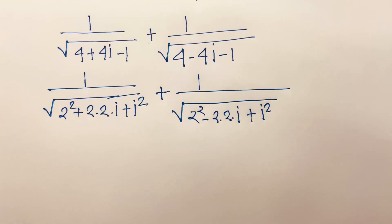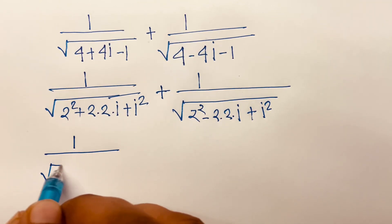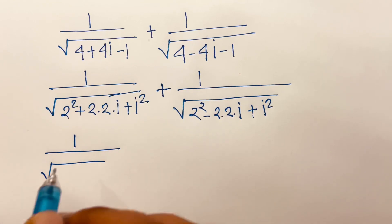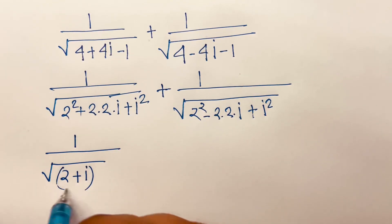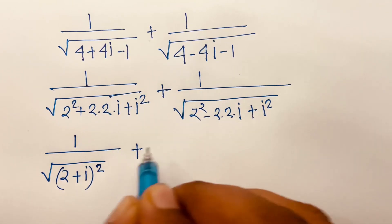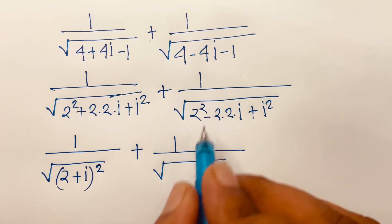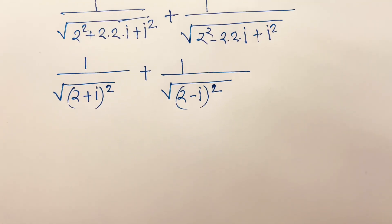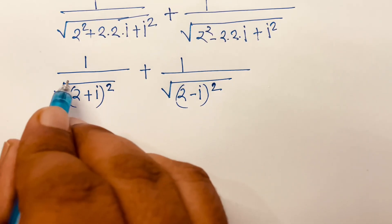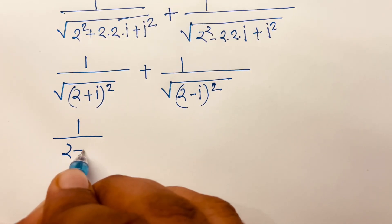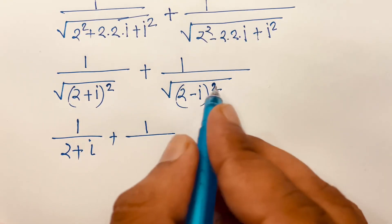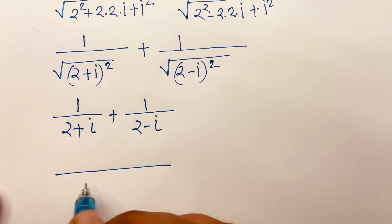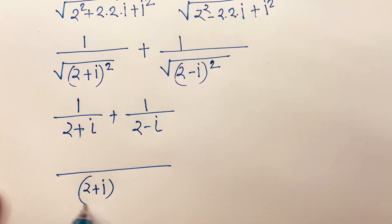We recognize that a² + 2ab + b² equals (a + b)², so this becomes one over square root of (2 + i)², which is one over (2 + i), plus one over square root of (2 - i)², which is one over (2 - i).